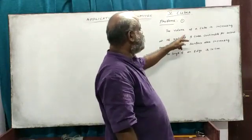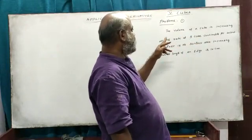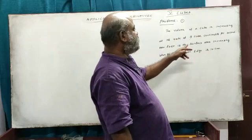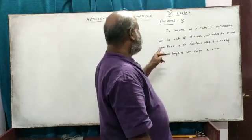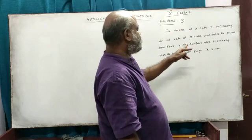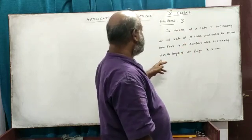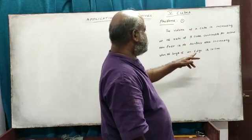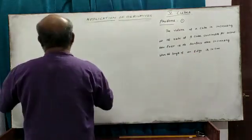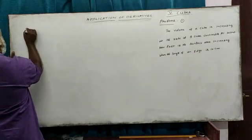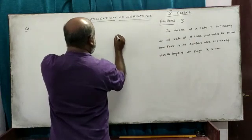The volume of a cube is increasing at the rate of 9 cubic centimeters per second. How fast is the surface area increasing when the length of an edge is 10 centimeters?